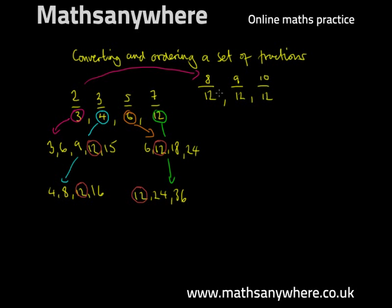Then finally, we've already got 12 on the bottom here, so 7-twelfths can remain as 7-twelfths, and it's still comparable to the other three fractions.